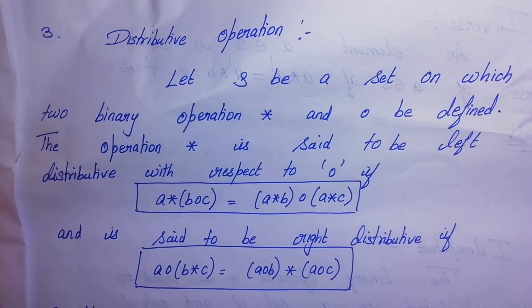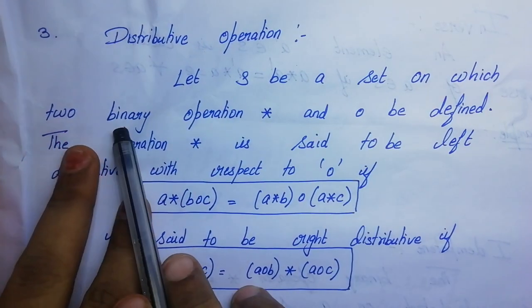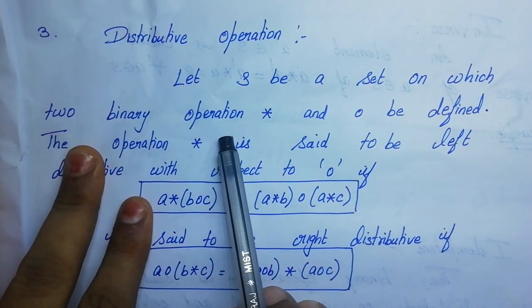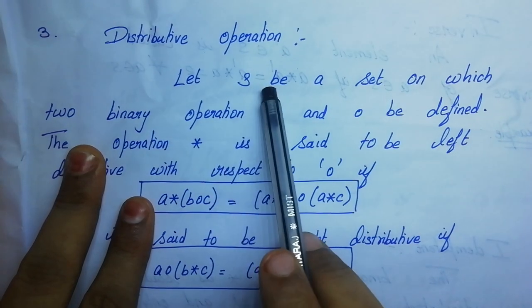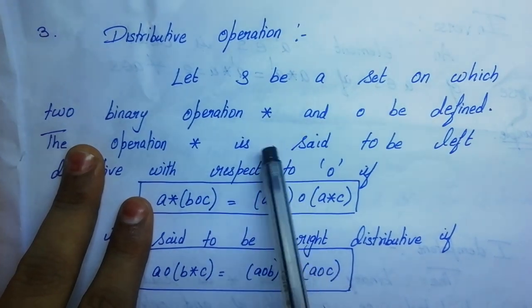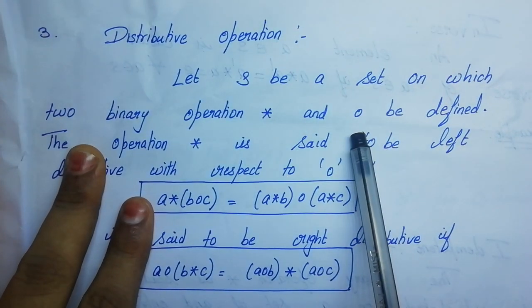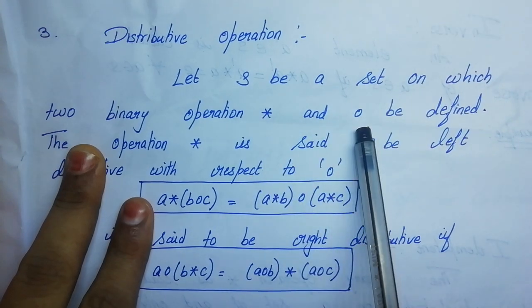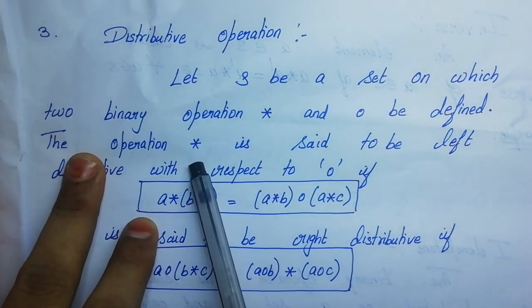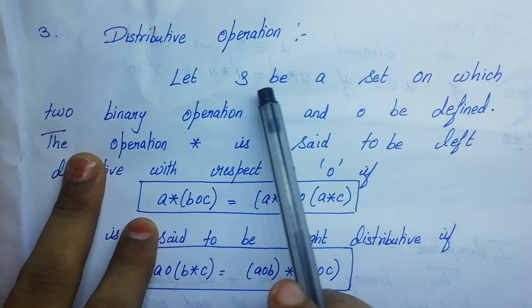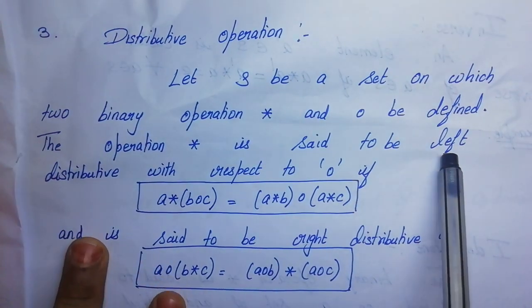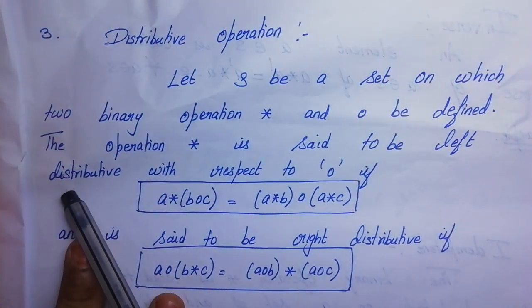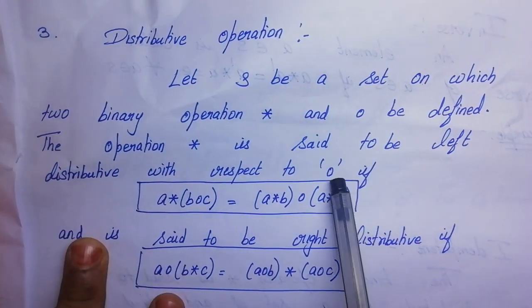In this class, we are going to see what a distributive operation is. If a set S is said to be a distributive binary operator, we define set S with two operators: star and composition. The star operator is said to be left distributive with respect to the composition operator.